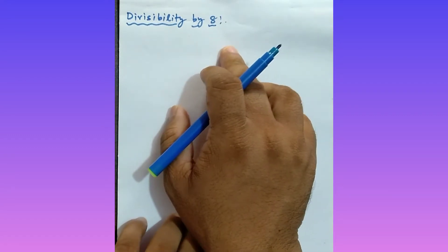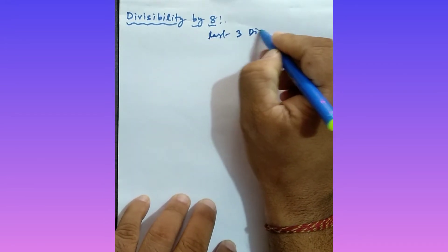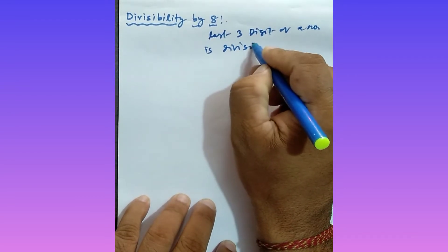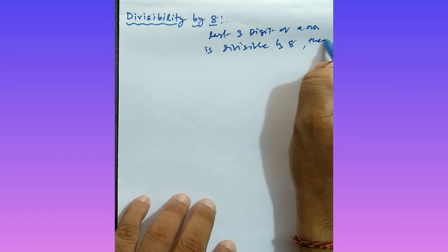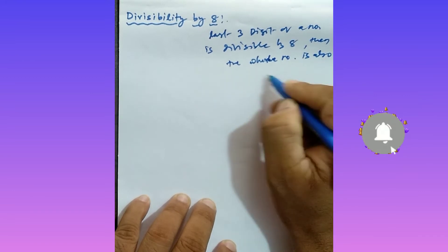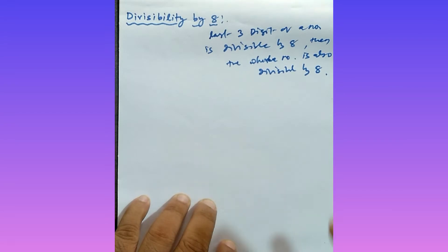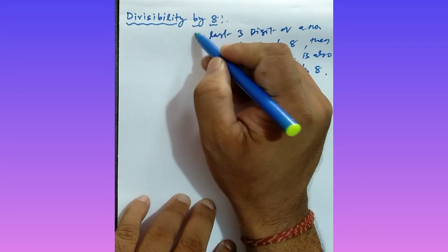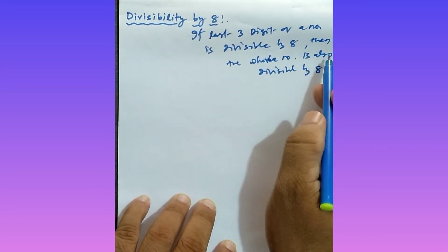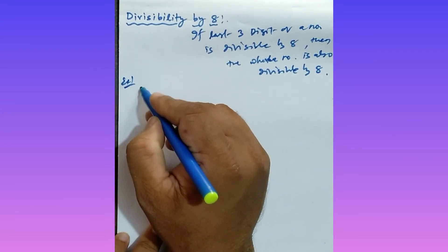Now the next rule — divisibility by 8. The logic is: if the last three digits of a number are divisible by 8, then the whole number is also divisible by 8. Let me give you an example.